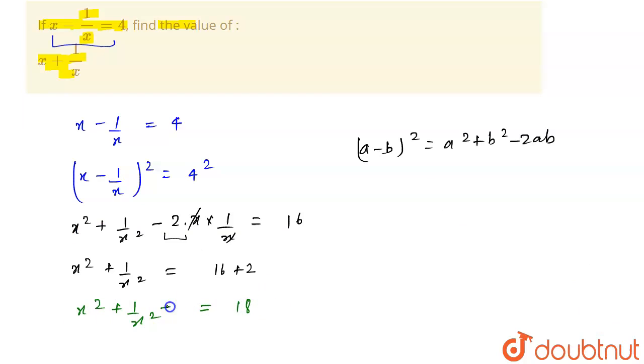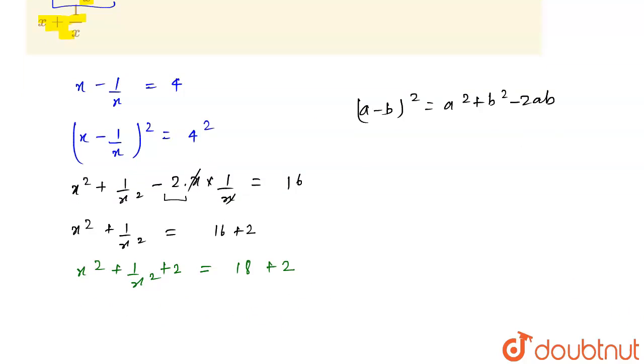Now we will do addition of 2 on both sides. So we can write this as x squared plus 1 upon x squared plus 2 times x times 1 upon x, and this is equal to 20.